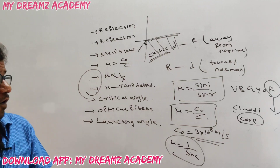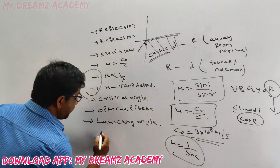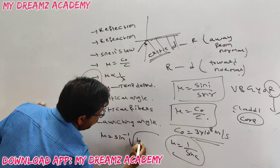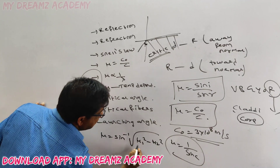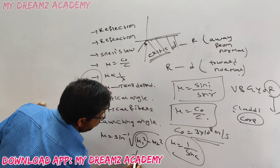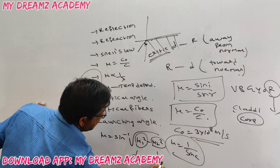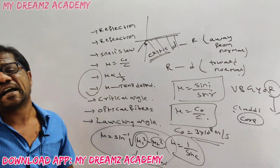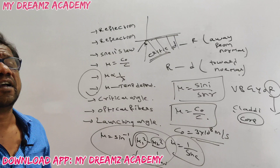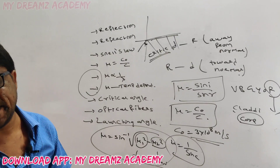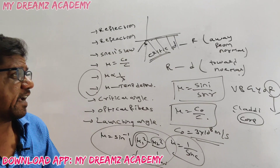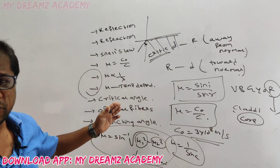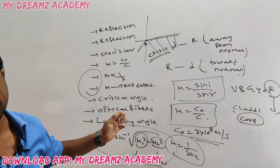In an optical fiber, there are two parts: the core (the center part) and the cladding (the outer part). The launching angle formula is: sin inverse of the square root of mu1 squared minus mu2 squared, where mu1 is the refractive index of the core and mu2 is the refractive index of the cladding. A direct equation substitution question is likely: which of the following is the correct expression for launching angle?